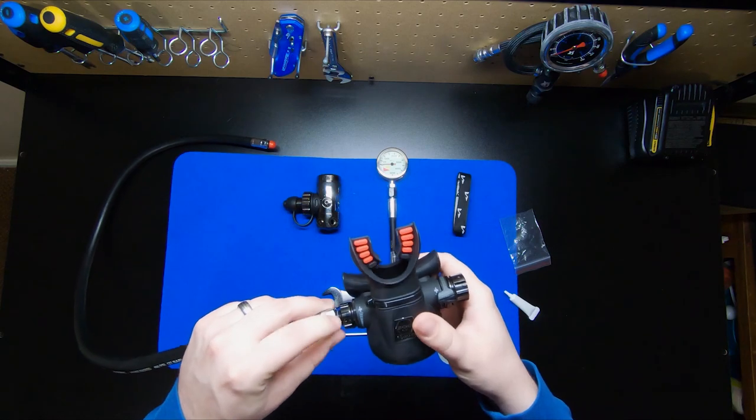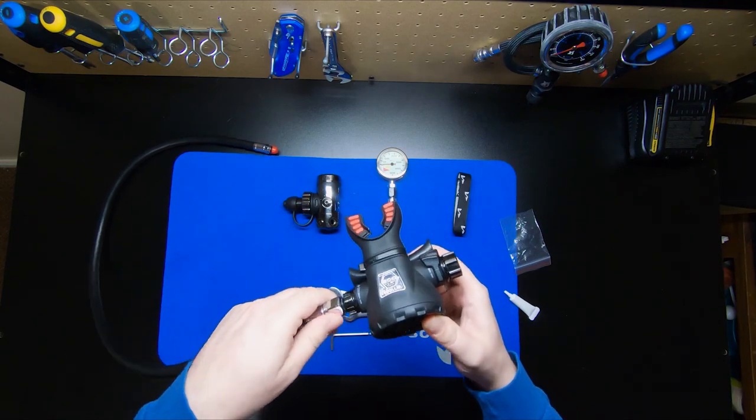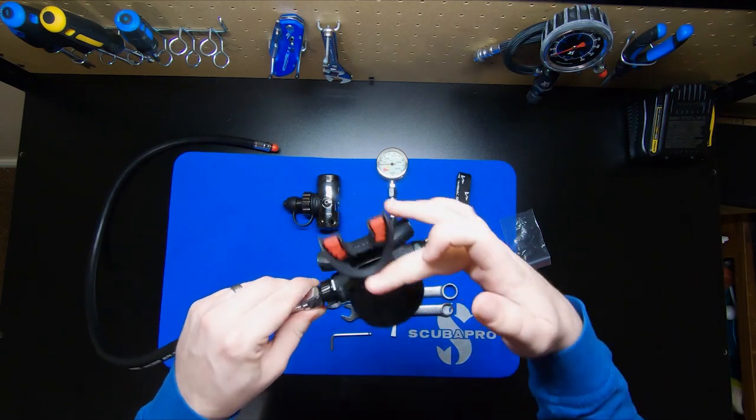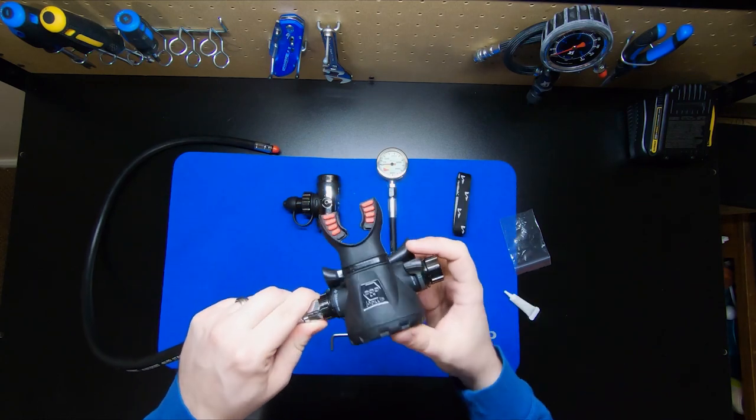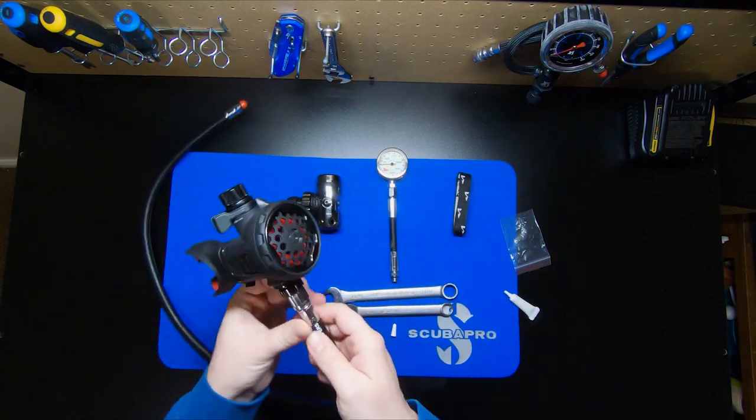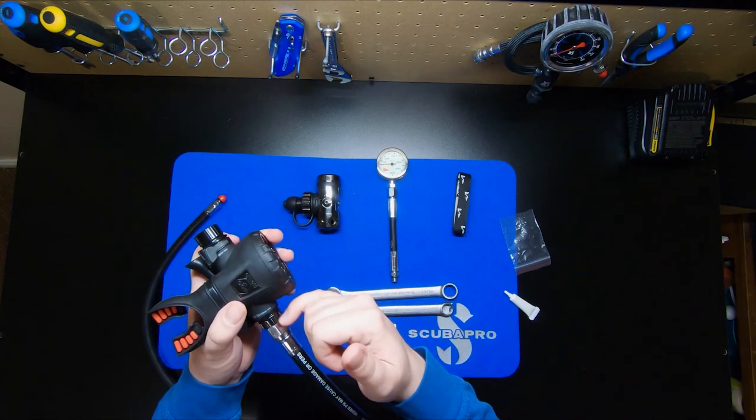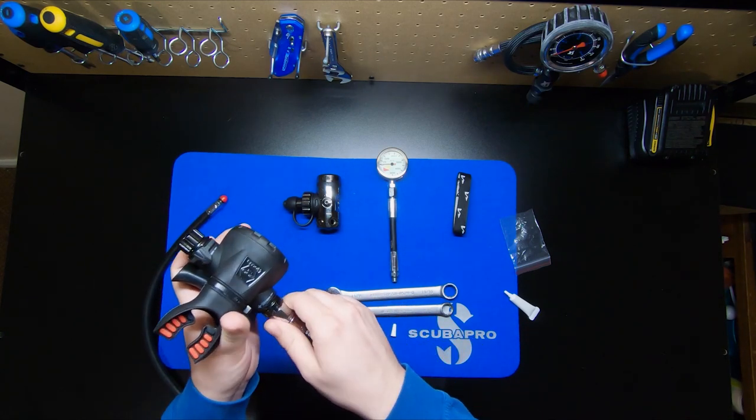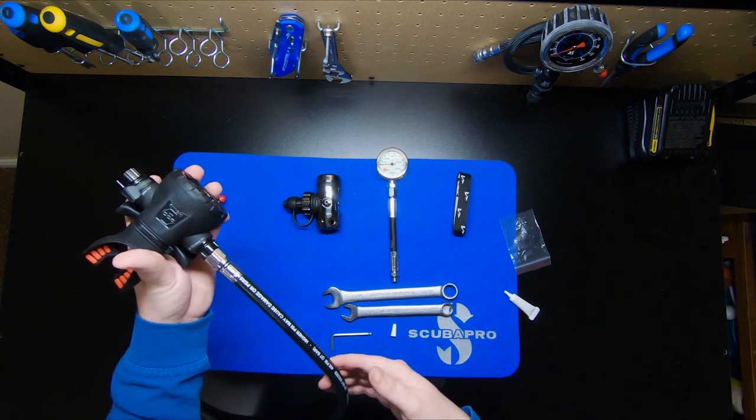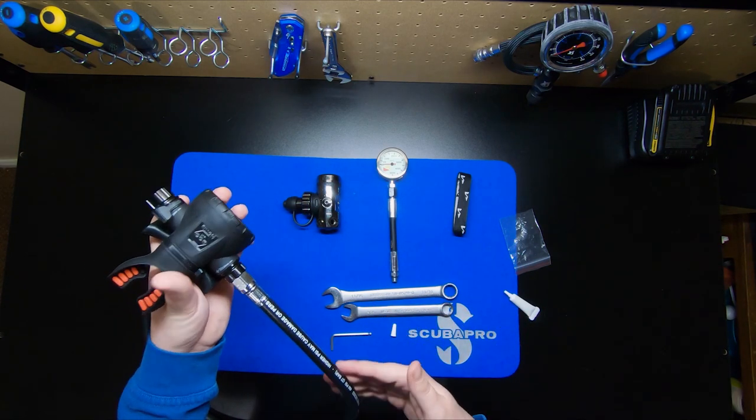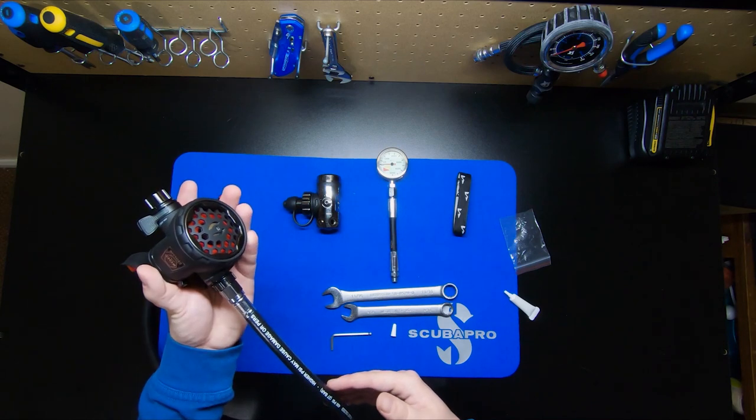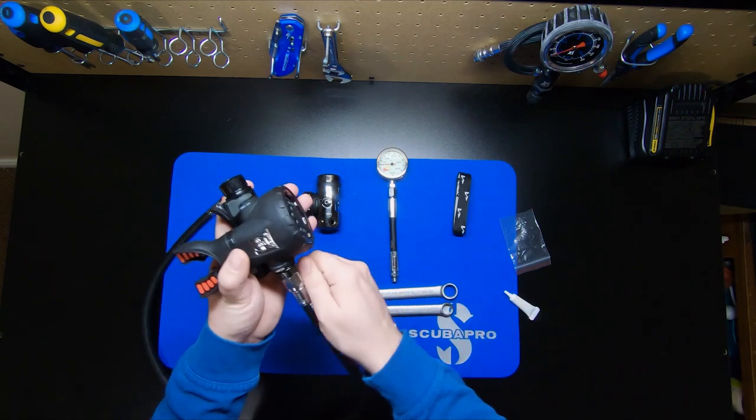Some divers choose to grease up these O-rings. I personally don't. They usually don't require it and oftentimes the grease just gives more of a surface for dirt and particulates and stuff to kind of stick to. So I tend to keep my regs fairly clean by not greasing that up too much. But I do still double check the O-rings. This is a new hose, so I looked at everything before I started filming and it is going to be more than sufficient.